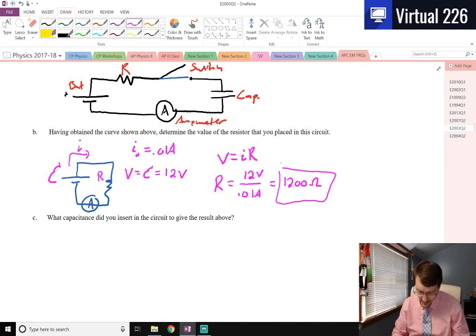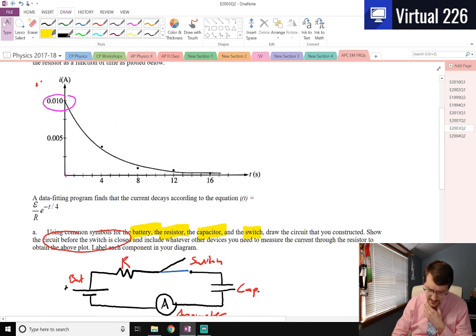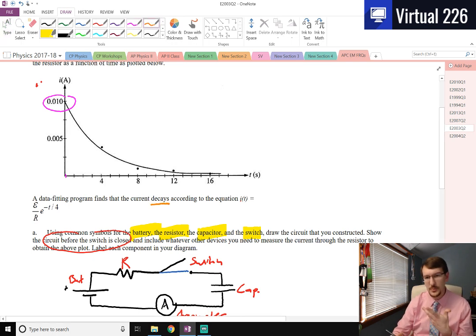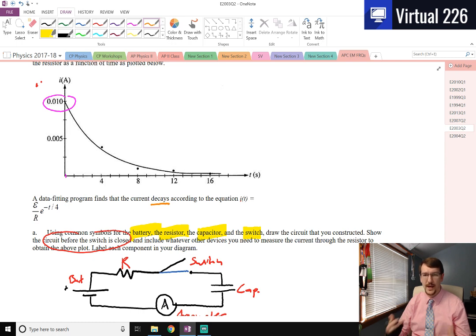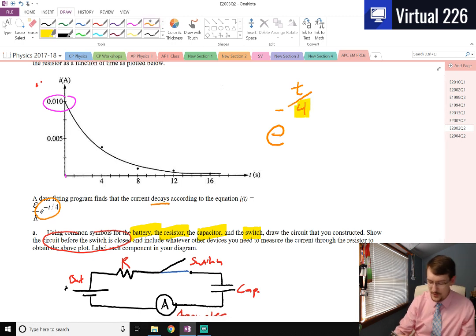What capacitance did you insert in the circuit to get the result above? So what we should recognize from an RC circuit is that this graph here, and they mention this here, it's an exponential decay. So it's decaying by half in some amount of time. It's very similar to a half-life equation if you're doing nuclear or anything in calculus. And it's really sitting right here. If we just kind of look at this real quick, this e to the minus, that's how you know it's a decay, it's a minus quantity. Some amount of time divided by 4.